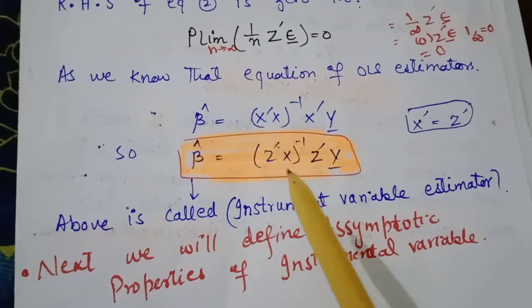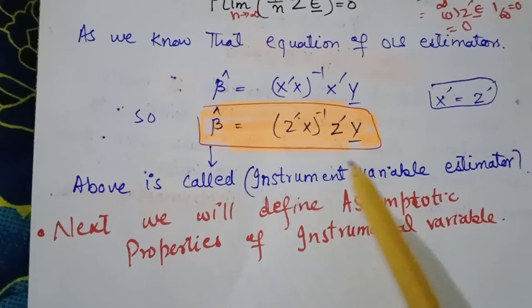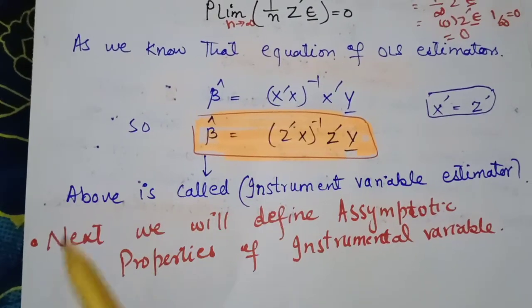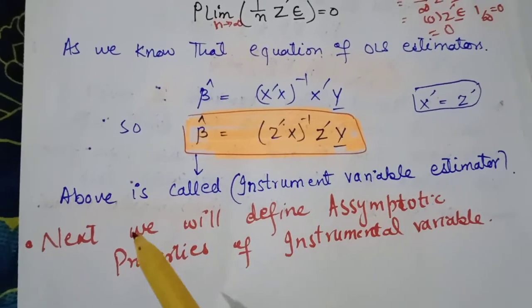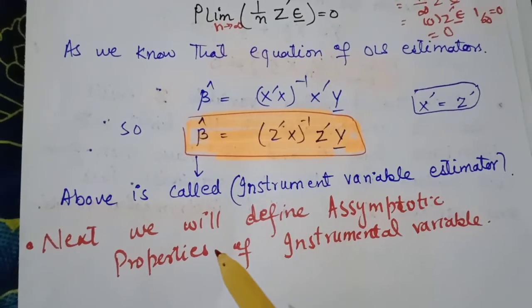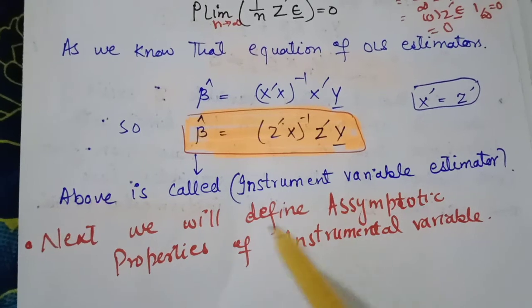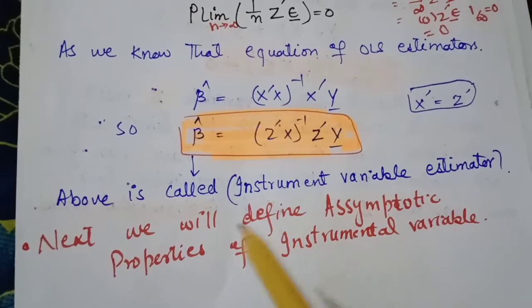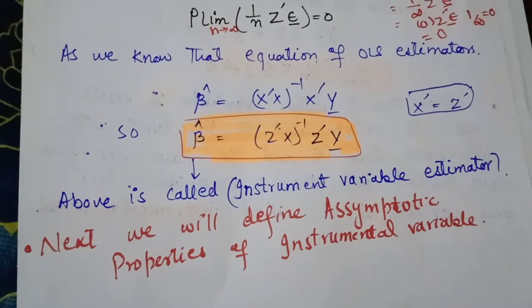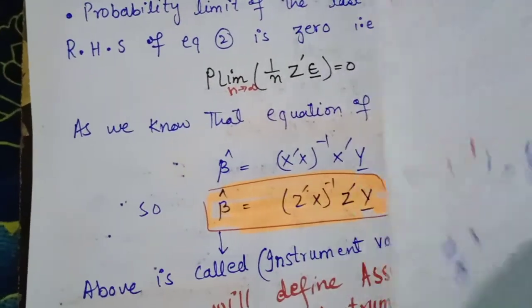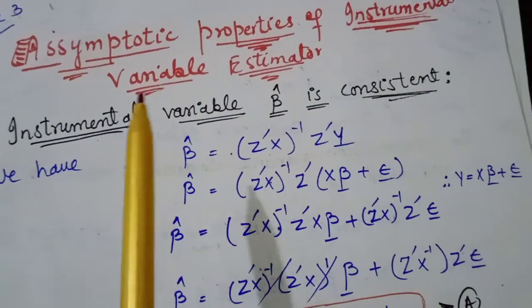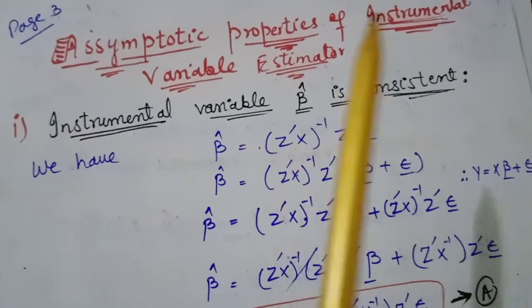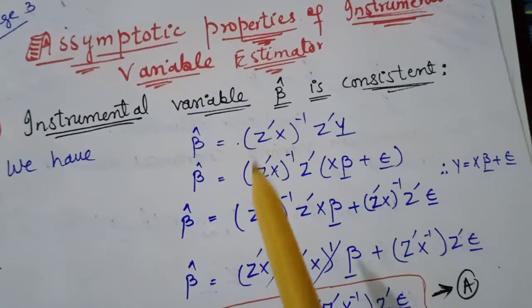Next, we will define and examine the asymptotic properties of the instrumental variable estimator — the sympathetic (asymptotic) properties of the instrumental variable estimator.